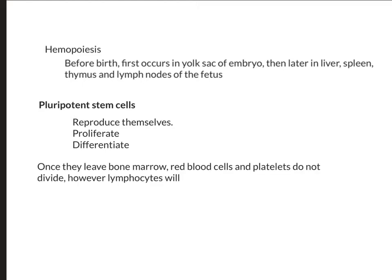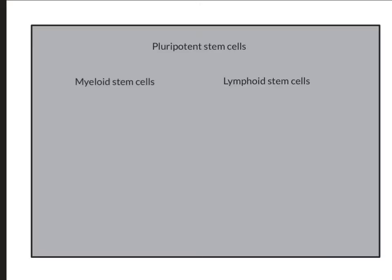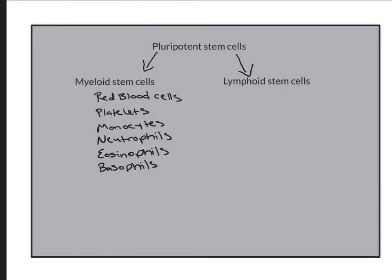Pluripotent stem cells can differentiate into either myeloid stem cells or lymphoid stem cells. Myeloid stem cells are the ones that give rise to red blood cells, platelets, monocytes, neutrophils, eosinophils, and basophils. These last four are white blood cells, and we'll talk about them more later on.